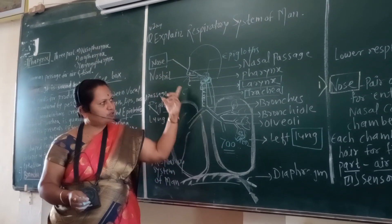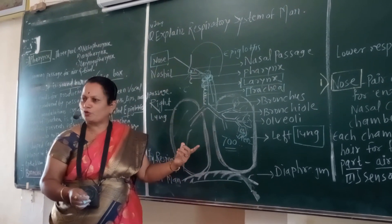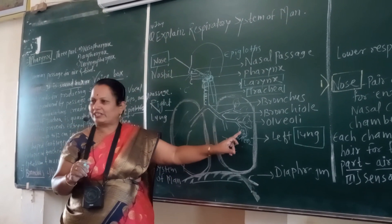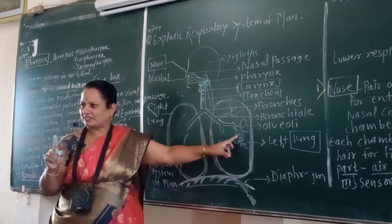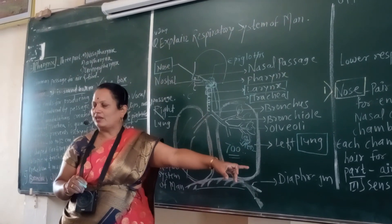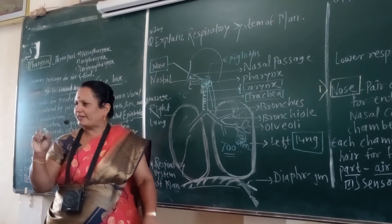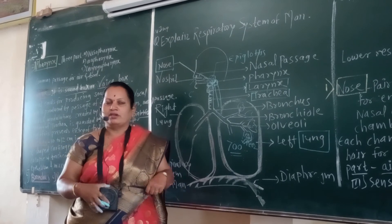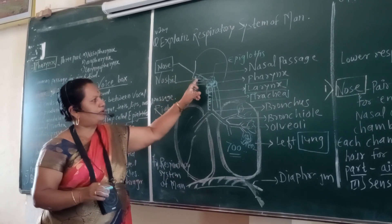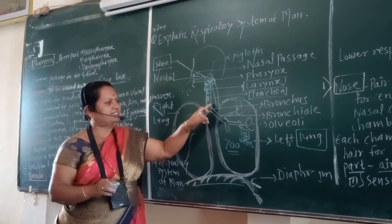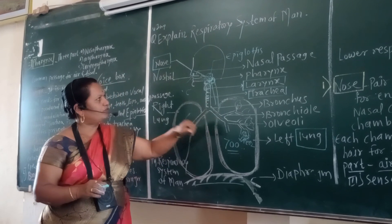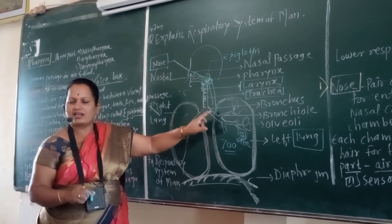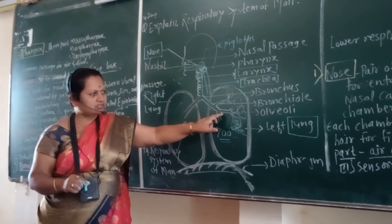The respiratory system of the human being is the most important system because exchange of O2 and CO2 takes place at the alveoli and blood capillaries, and oxygen is carried for the production of energy by combustion or oxidation of food. Therefore, the human respiratory system mainly consists of upper respiratory system, lower respiratory system, trachea, lungs, alveoli, nose, pharynx, larynx, trachea, bronchi, bronchioles, and alveoli.